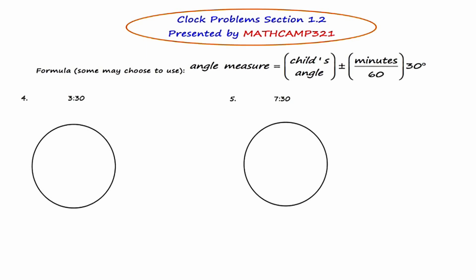So the formula that I like to use with my students is that to find the angle measure, we're going to find what's called the child's angle. And I'll explain to you what that is when we do the problem. Plus or minus, you've got to decide whether you're going to add or subtract the minutes divided by 60 times 30. It seems a little complicated at first, but after you do a couple of samples, then you'll get the hang of it and it won't be so bad. The first thing that I'm going to do for number 4, 3:30, is draw the features of the clock.